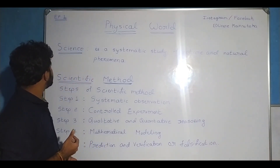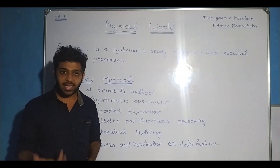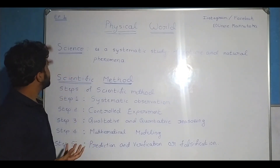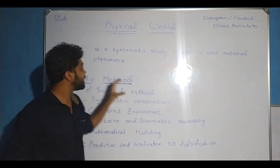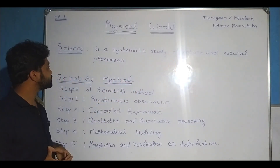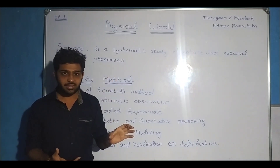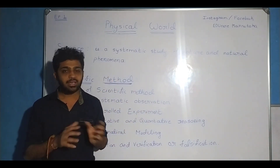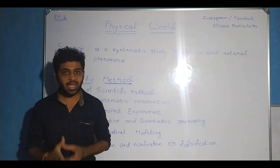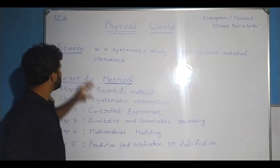Let us start now and understand the meaning of science. We can define science like this: science is a systematic study of nature and natural phenomena. That means we are studying nature and natural phenomena in a systematic manner, and this kind of study is called science.